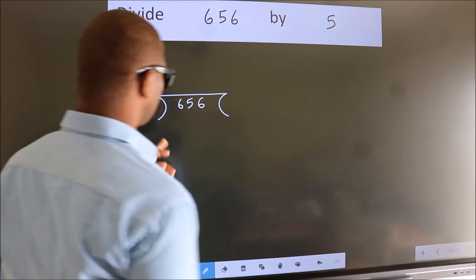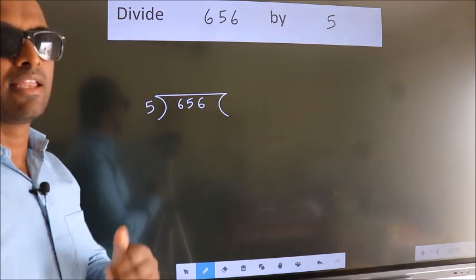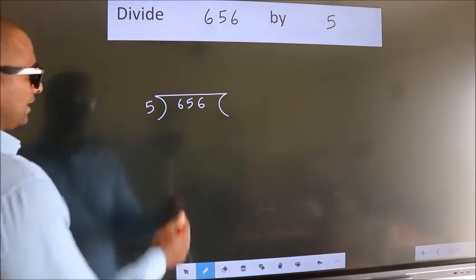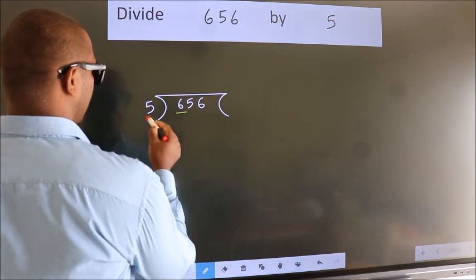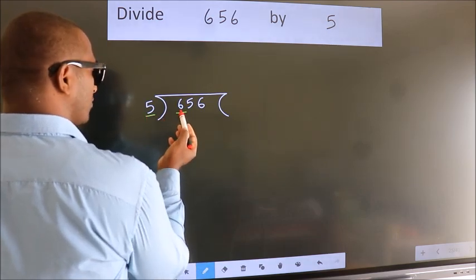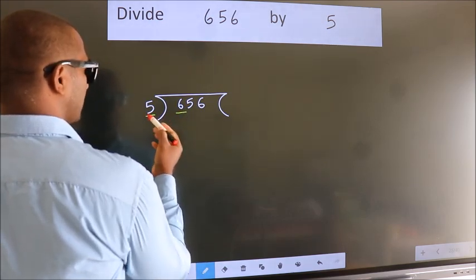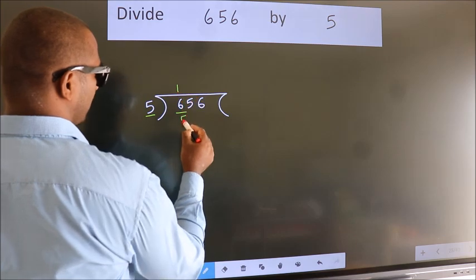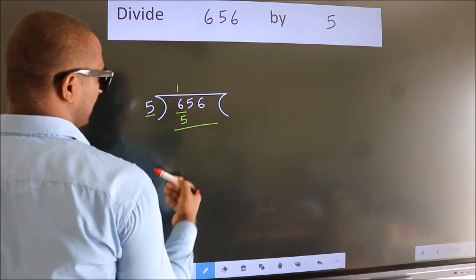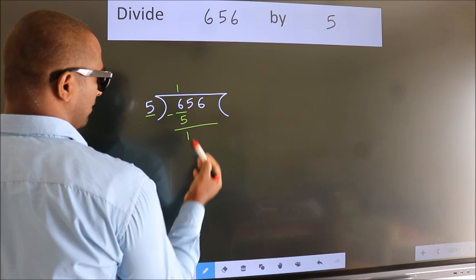This is your step 1. Next, here we have 6, here 5. A number close to 6 in 5 table is 5 once 5. Now we should subtract. We get 1.